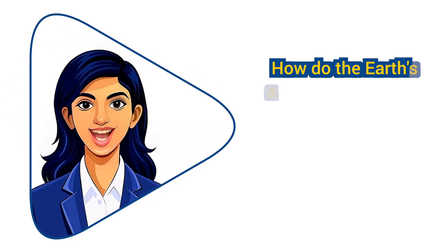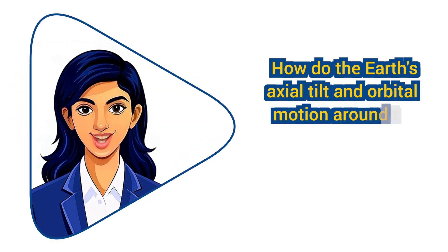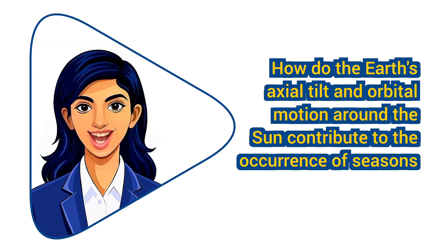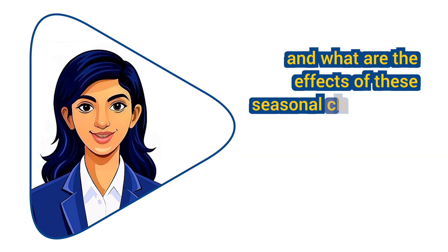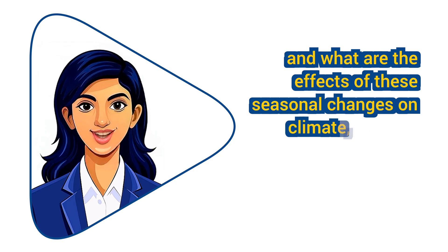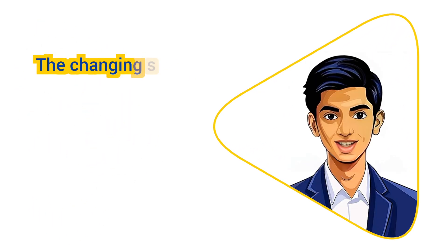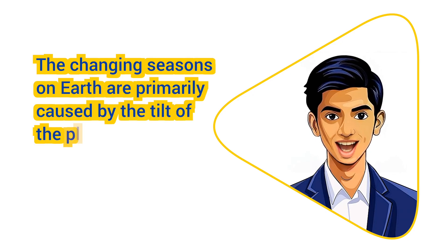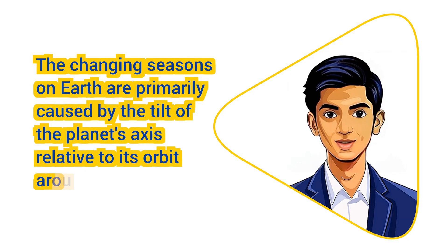How do the Earth's axial tilt and orbital motion around the Sun contribute to the occurrence of seasons, and what are the effects of these seasonal changes on climate, weather patterns, and ecosystems? The changing seasons on Earth are primarily caused by the tilt of the planet's axis relative to its orbit around the Sun.